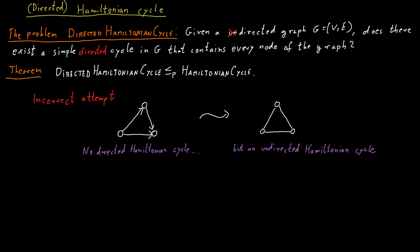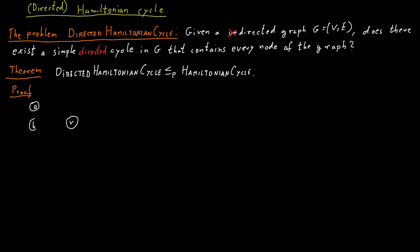So how does the reduction work instead? We have a directed graph. Let's focus on a single vertex here, vertex V. Vertex V has some incoming edges, say from nodes A, B, and C, and has some outgoing edges, for example, to nodes D and E.